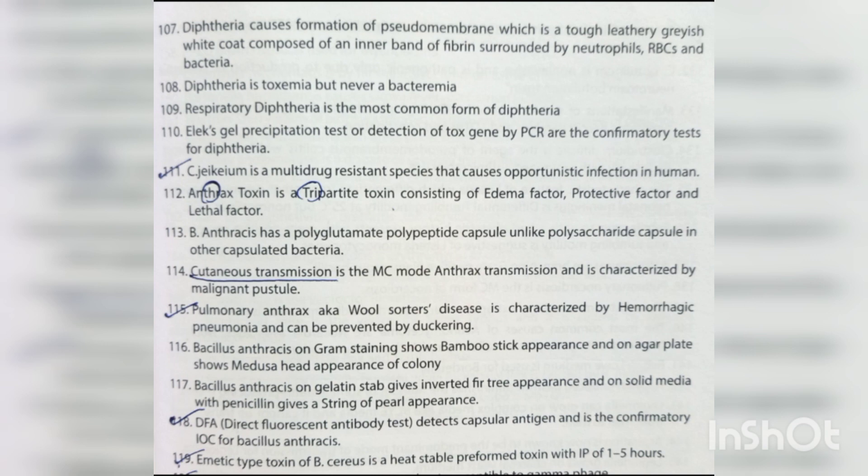Anthrax toxin is a tripartite toxin consisting of edema factor, protective factor, and lethal factor. B. anthracis has a polyglutamate polypeptide capsule, unlike the polysaccharide capsule in other capsulated bacteria. Cutaneous transmission is the most common mode of anthrax transmission, characterized by malignant pustule. Pulmonary anthrax (Woolsorter's disease) is characterized by hemorrhagic pneumonia and can be prevented by duckling. B. anthracis on Gram staining shows bamboo stick appearance; on agar plates shows medusa head colony; on gelatin stab shows inverted fir-tree appearance; on solid media with penicillin shows string of pearls appearance. DFA detects capsular antigen and is the confirmatory investigation for B. anthracis.